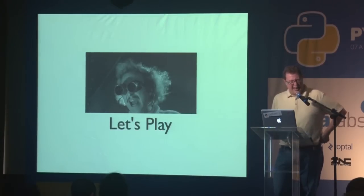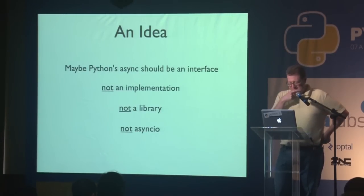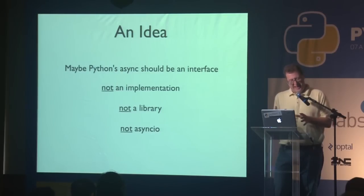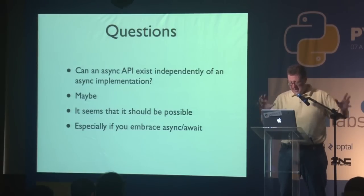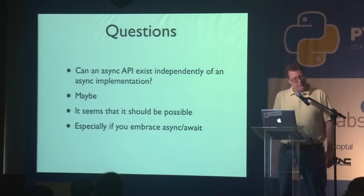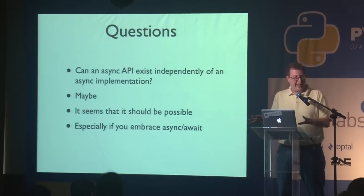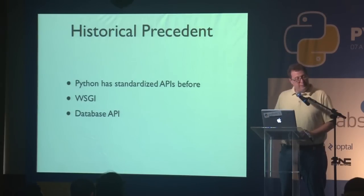It's kind of doing a totally different thing. This gets back to the idea that maybe async could be an interface — maybe it doesn't have to be a library, maybe it could be an interface purely based on the async and await syntax. There is some historical precedent: Python has standardized APIs for things like WSGI and the database API. What is the design of an asynchronous API? This is actually a really tricky problem — like, what needs to have an await on it and what doesn't? What is the consistency in the interface?